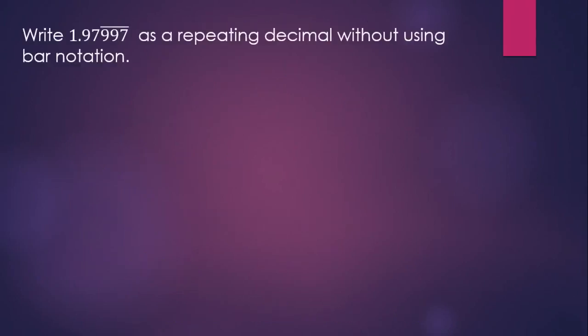Write this number as a repeating decimal without using bar notation. The first three digits don't repeat, but after that we need to keep repeating 997 over and over again. So we'll have a number that looks like this.